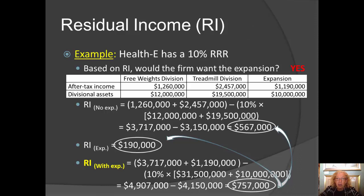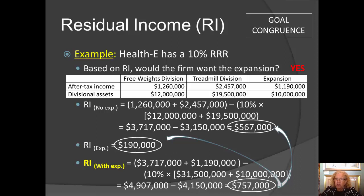Using residual income instead of ROI to evaluate the treadmill division manager has alleviated the moral hazard and created goal congruence. Every time a project jumps the hurdle and generates at least the required rate of return, it will enrich both the division and the firm as a whole. Therefore, the division manager will make the choice that the firm would want them to make.